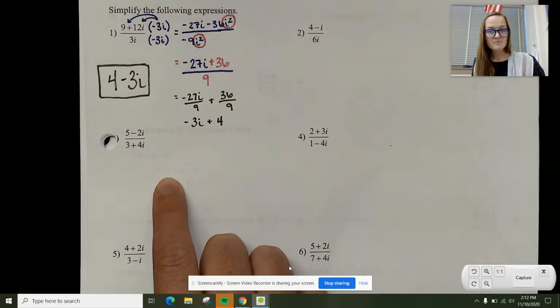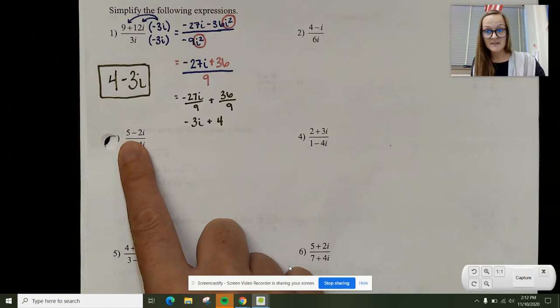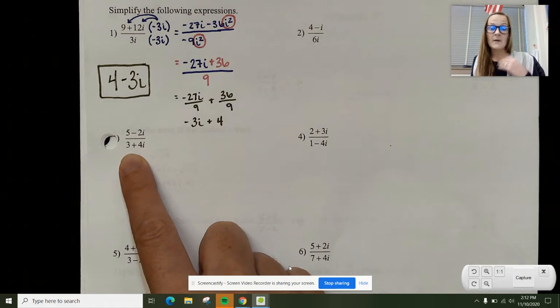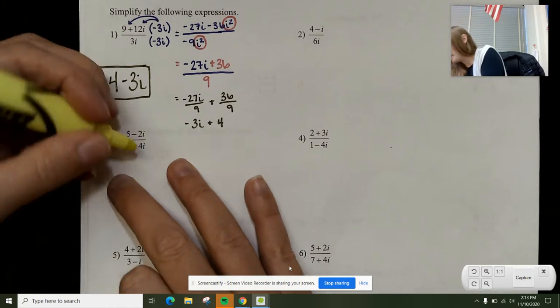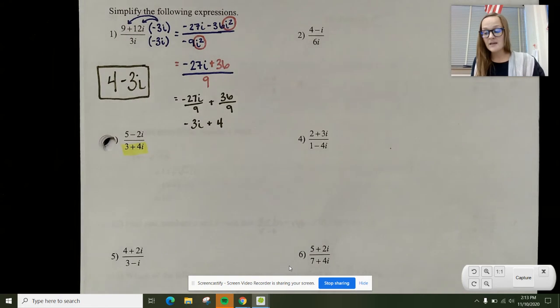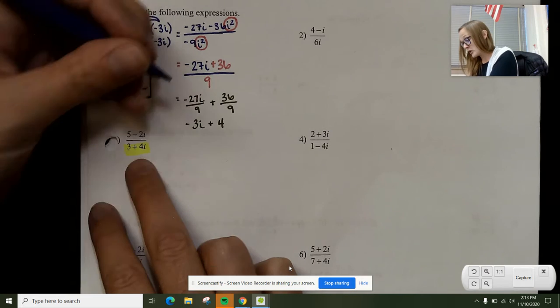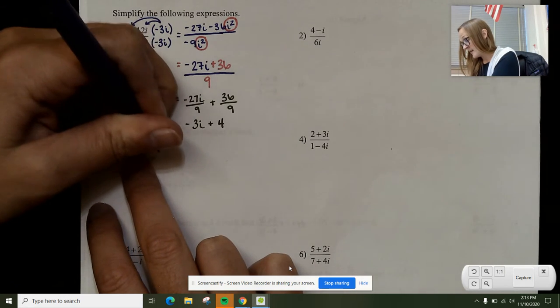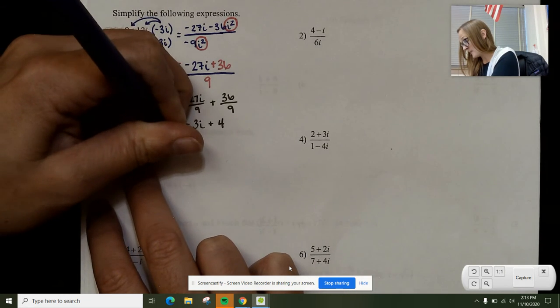Not 2, but 3. I've got 5 minus 2i over 3 plus 4i. Now again, I don't care what's on the top. I care what's on the bottom. On the bottom, you see 3 plus 4i. Your immediate thought has to be, what is the complex conjugate of that? I change the sign in front of the i. So now I've got 3 minus 4i.